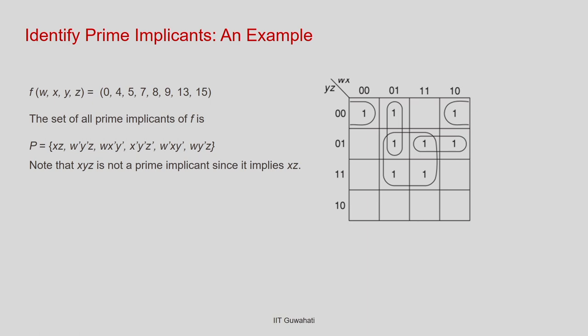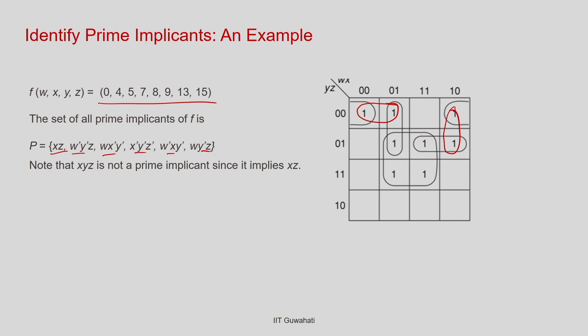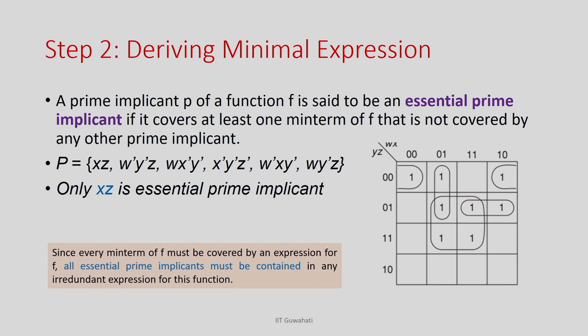In this example there are 6 prime implicants in total. Those that can be covered by a bigger cube are not prime implicants — effectively there are 6 prime implicants confirmed. Now the next step is deriving the minimal expression. For this, we introduce two terminologies: essential prime implicant and redundant prime implicant.